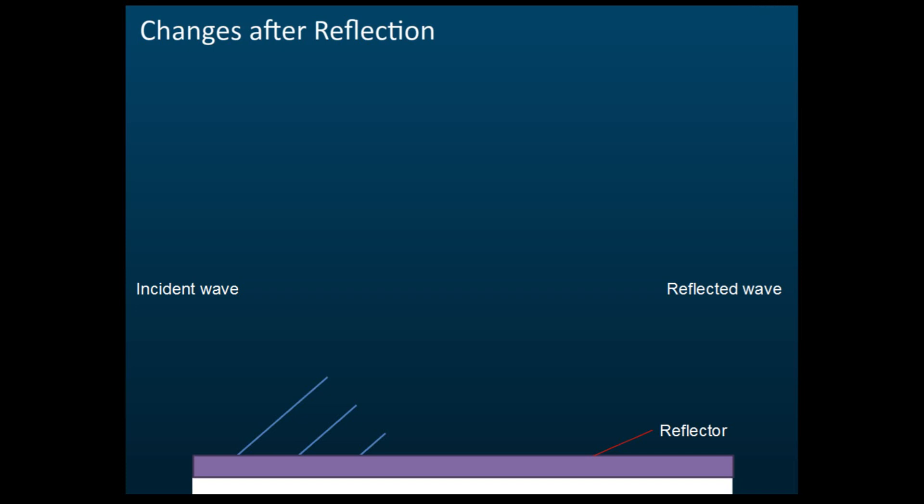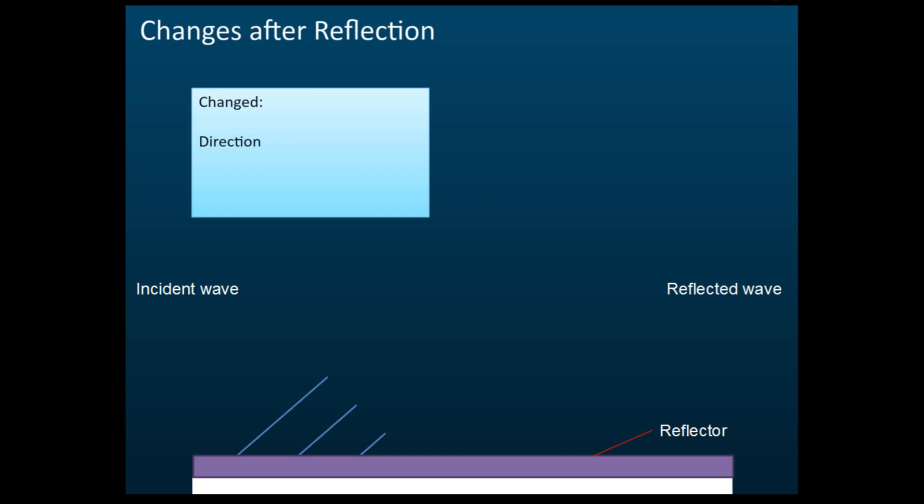Changes after Reflection. So what is changed? The direction. The direction of the wave. After it hits the reflector, the direction changes. But what remains unchanged? The wavelength is still the same. The frequency is still the same, and the speed is still the same. You must know this because this may be asked in your exam. They will ask you what has changed and what has not changed. So wavelength, frequency, and speed all remain unchanged, but only the direction changes.